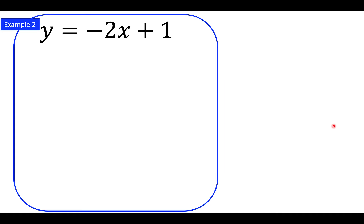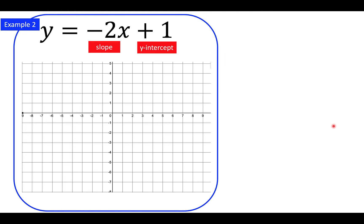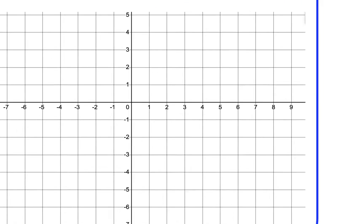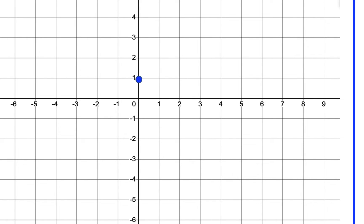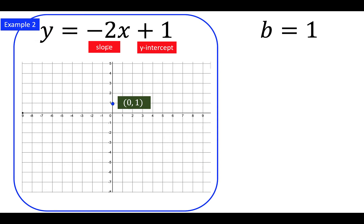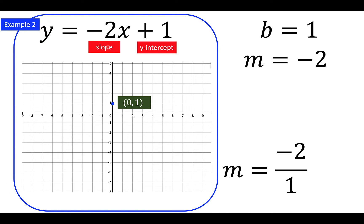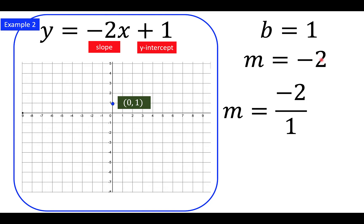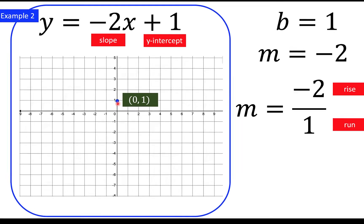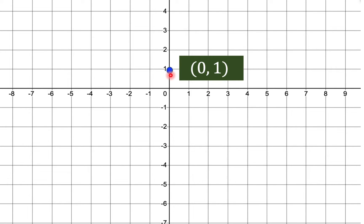Let's have another example. Let's say we are given y equals negative 2x plus 1. Here the y-intercept is 1. Graphically, b equals 1, so the point of intersection between the y-axis and the line is at y equals positive 1. The slope is negative 2, written as rise over run. Since we have an integer, it is implied as negative 2 over 1, so the rise is negative 2 and the run is positive 1. Visually, from the y-intercept b equals 1, we go down 2 units and go right 1 unit.